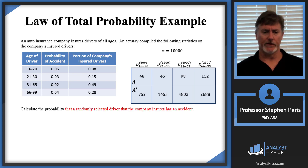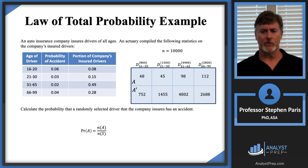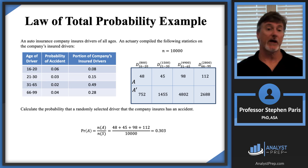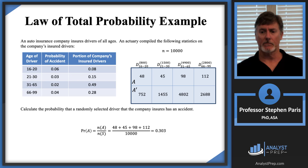The question asks for the probability that a randomly selected driver from the company has an accident. That's just the probability of A. The number of outcomes in A is 48 + 45 + 98 + 112, divided by 10,000, giving 3.03%. So that's my answer to this law of total probability problem.